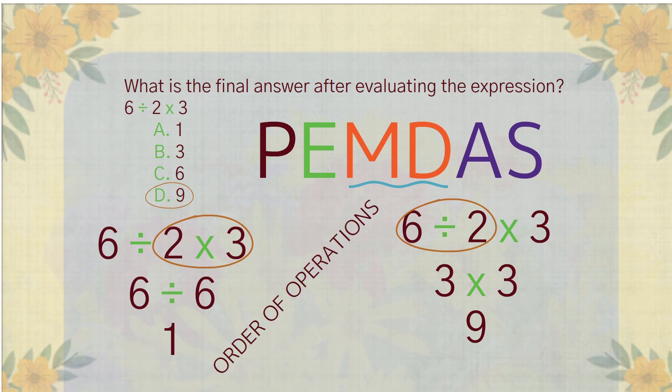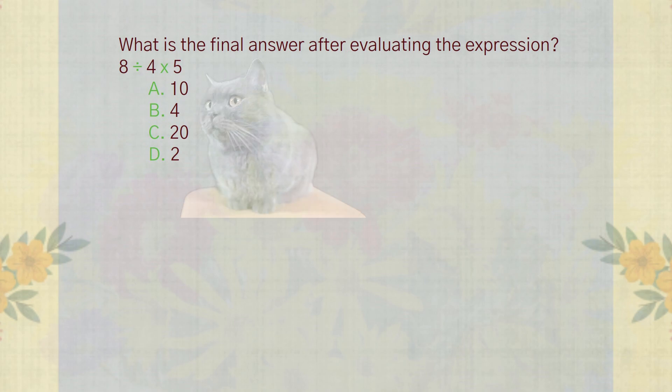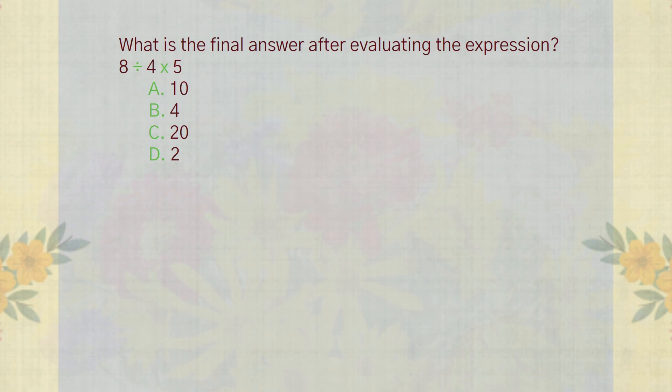Now you can try solving this question and post your answer with steps in the comments below. What is the final answer after evaluating the expression 8 divided by 4 times 5? Here are the answer choices: A) 10, B) 4, C) 20, D) 2. I will check your answers.